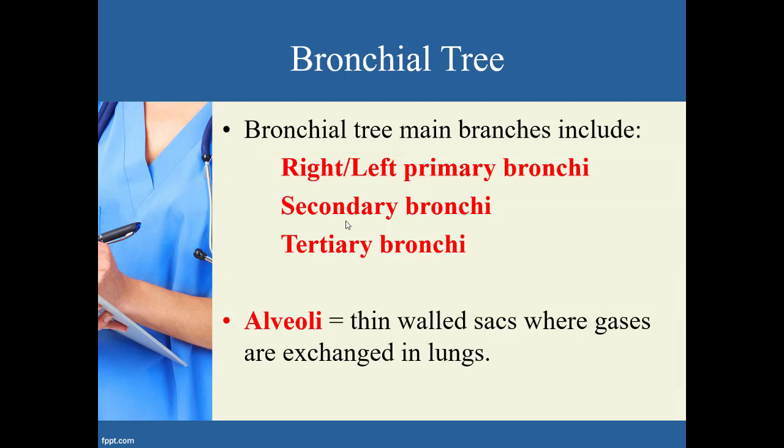After the primary bronchi, you have secondary bronchi, then tertiary bronchi. When you see terms like primary, secondary, and tertiary, they are indicating the order in which things occur — primary is the first division from the trachea, secondary happens after that, and tertiary after secondary. All of these divisions eventually lead to where gas exchange actually happens inside the lungs — the alveoli.